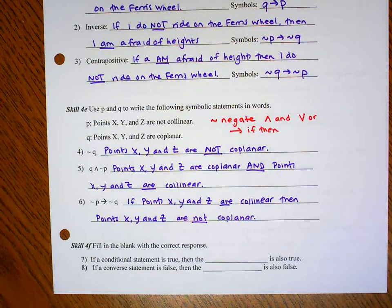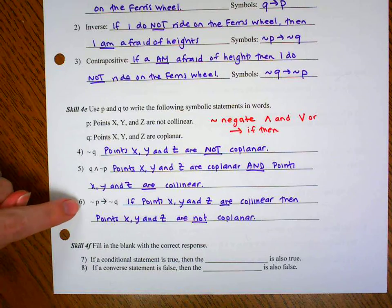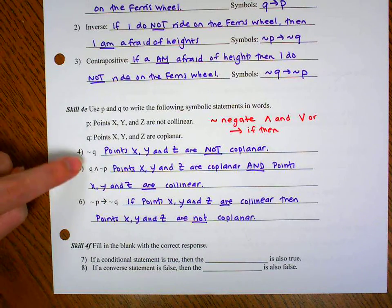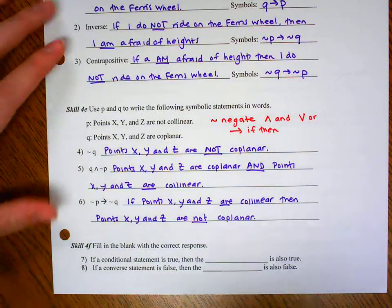So notice when we take the negation, we either put the word not in or we take it away. Notice only six had if then because it had the arrow. These did not have the words if then.